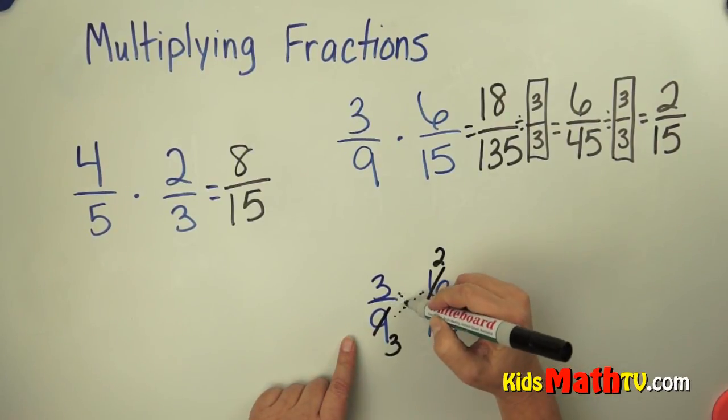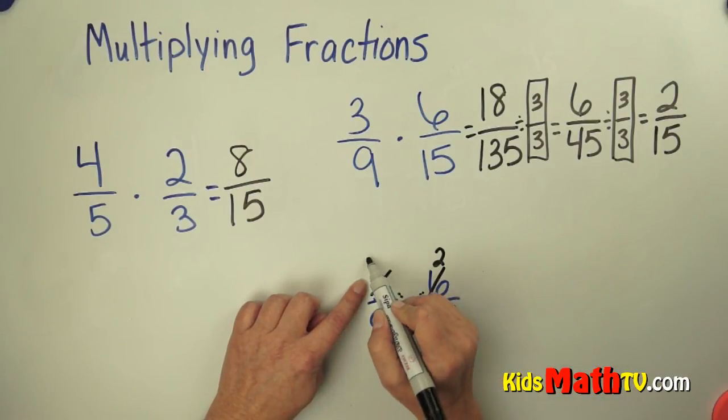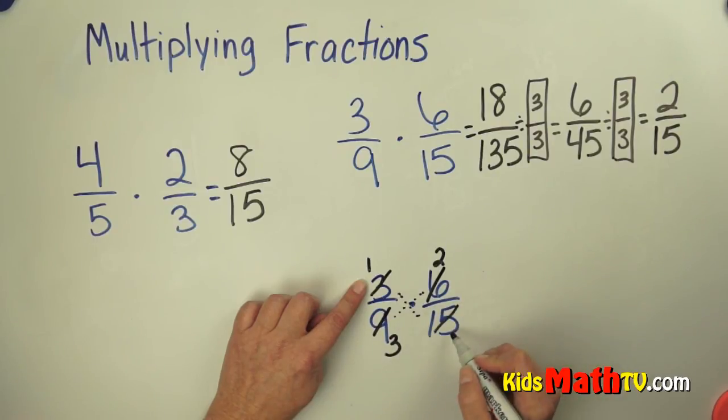Then I look at these numbers. Is there a number that will divide 3 and 15 evenly? Yes, 3. So I divide by 3. 3 divided by 3 is 1. 15 divided by 3 is 5.